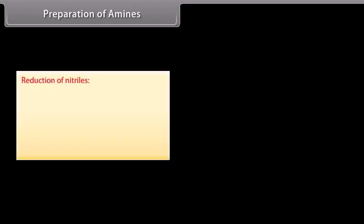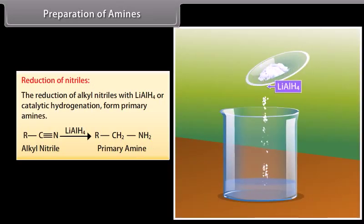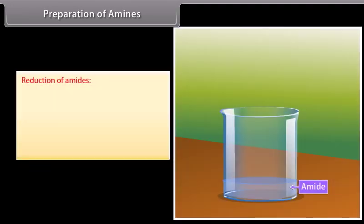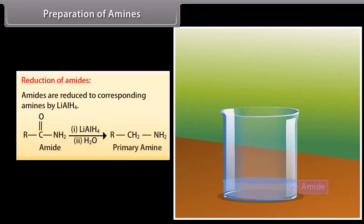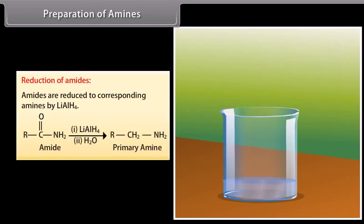Reduction of nitriles: The reduction of alkyl nitriles with lithium aluminium hydride or by catalytic hydrogenation forms primary amines. Reduction of amides: Amides are reduced to corresponding amines by lithium aluminium hydride.